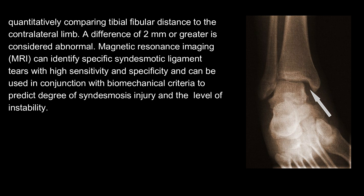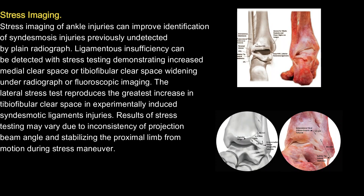Magnetic resonance imaging (MRI) can identify specific syndesmotic ligament tears with high sensitivity and specificity and can be used in conjunction with biomechanical criteria to predict the degree of syndesmosis injury and the level of instability. Stress imaging of ankle injuries can improve identification of syndesmosis injuries previously undetected by plain radiograph. Ligamentous insufficiency can be detected with stress testing demonstrating increased medial clear space or tibiofibular clear space widening under radiographic or fluoroscopic imaging. The lateral stress test reproduces the greatest increase in tibiofibular clear space in experimentally induced syndesmotic ligament injuries. Results of stress testing may vary due to inconsistency of projection beam angle and stabilization of the proximal limb during stress maneuver.